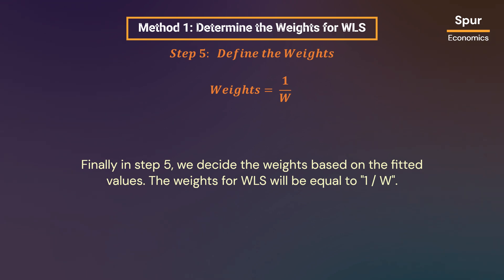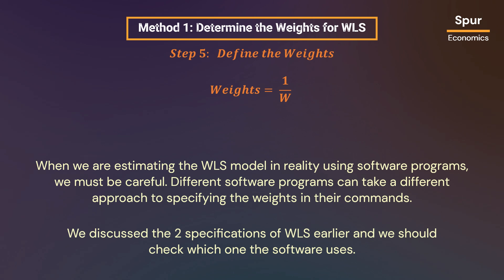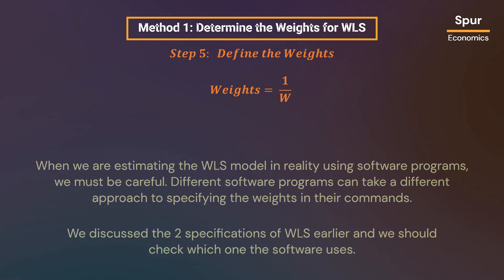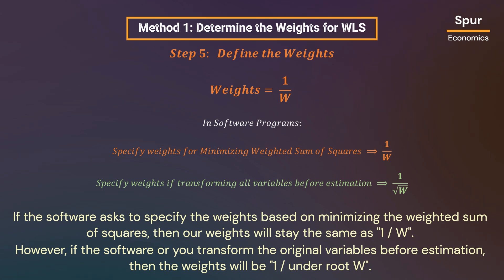Finally, in step 5, we decide the weights based on the fitted values. The weights for WLS will be equal to 1 over W. When estimating the WLS model using software programs, we must be careful, as different software programs take different approaches to specifying the weights in their commands. We should check which specification the software uses. If the software asks to specify weights based on minimizing the weighted sum of squares, our weights stay as 1 over W. However, if the software or you transform the original variables before estimation, then the weights will be 1 over the square root of W.